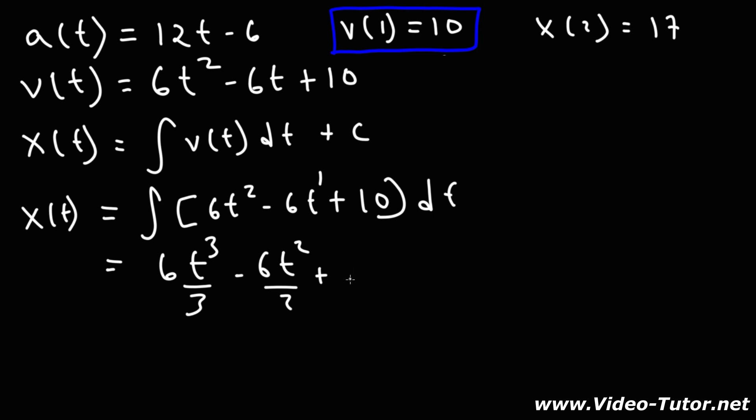And for the constant 10, when we integrate it with respect to t, it's going to be 10t, but then plus c. So simplifying this expression, we have 6 divided by 3 is 2, 6 divided by 2 is 3, and so forth.